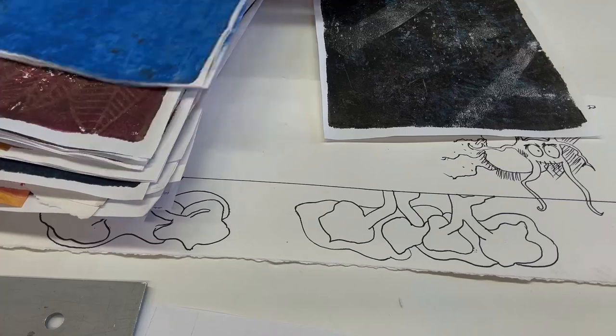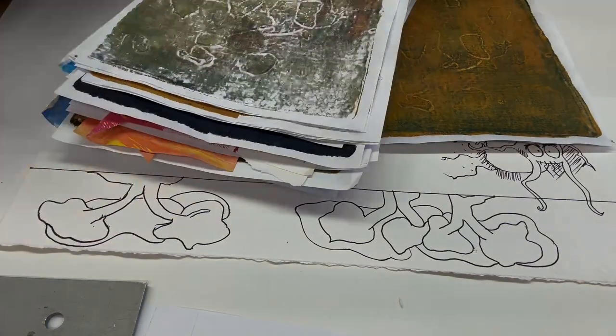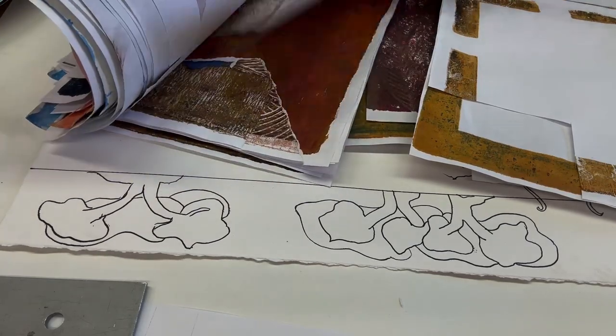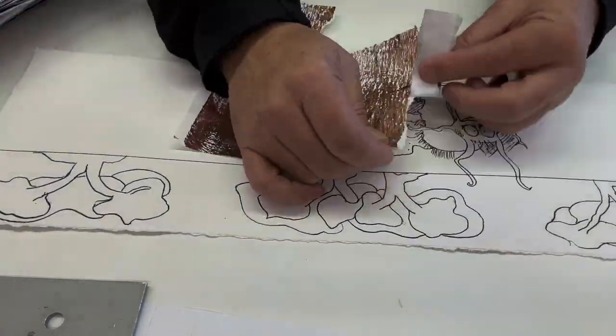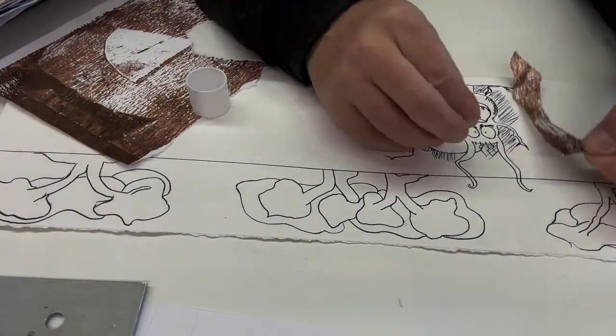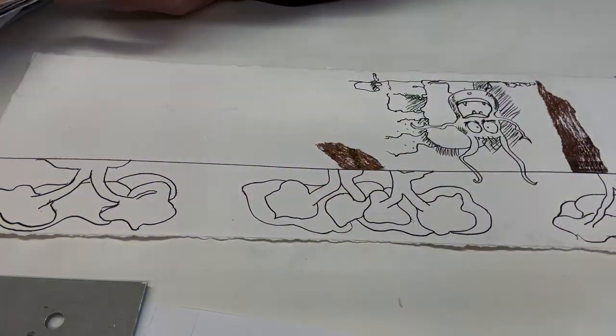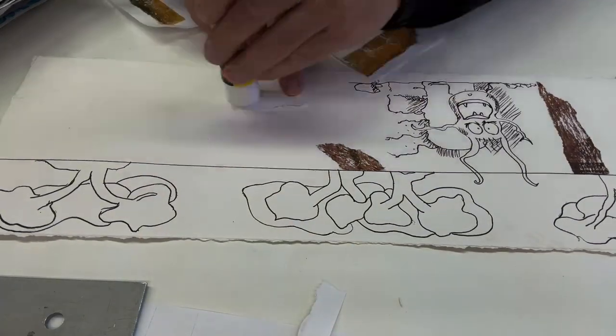Now we're going to start gluing some things down. I went and got a stack of jelly papers, going to start pulling some neutral colors out of there and just gluing some things down. I'm using my glue stick, no muss, no fuss, easy, fast.